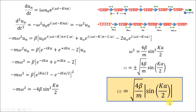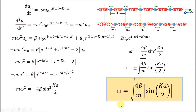What we get is the relation between omega and k, and this is called the dispersion relation for a linear monoatomic solid. It can be seen that omega is not linearly related to k; rather, it is a periodic function of k. It has a maximum value of sqrt(4 beta / m), where beta is the spring constant related to the elastic properties of the solid. We will stop here and continue by plotting omega as a function of k in our next lecture. Thank you.